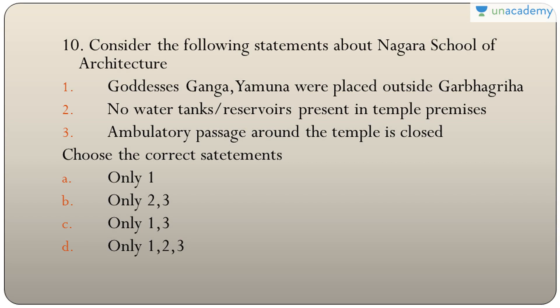Question ten: statements about the Nagara school of architecture — goddesses Ganga and Yamuna were placed outside Garbhagriha, no water tank or reservoir was present in the temple premises, and the ambulatory passage around the temple is closed. All three are correct. The answer is D — only one, two, and three.